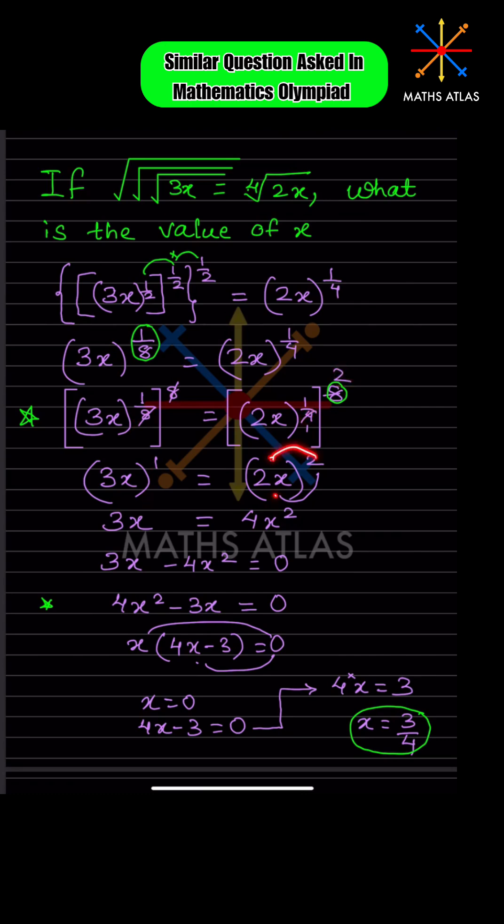When you solve this one, this becomes 4x². Bring this here, so it will be minus. We have to make this positive, this is x², make it positive. Since we've made it positive, this should be negative.